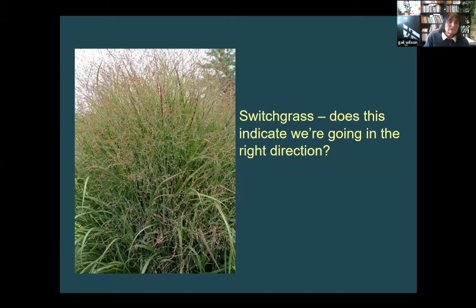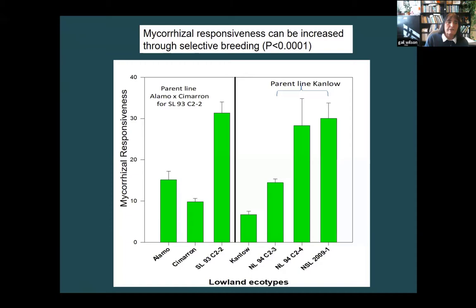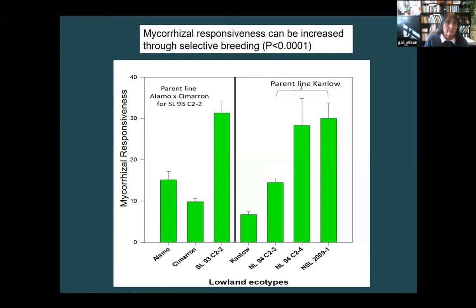So can we work with breeders to breed for plants that are equivalent in biomass production and yet could use less fertilization and improve the quantity of mycorrhizal fungi in the soil? Our work with switchgrass shows that under specific nutrient breeding conditions, we can increase the mycorrhizal dependence through breeding.